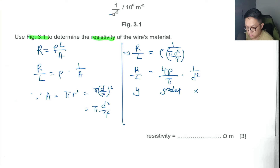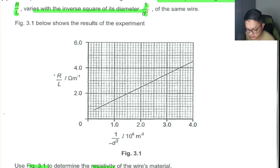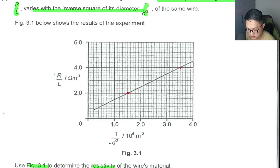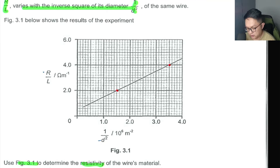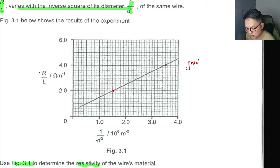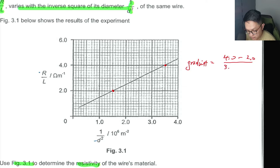Let's pick two nice points on the graph to find the gradient. Going back to the graph, let's use this point here and this one here. The gradient equals (4.0 − 2.0) / (3.5 − 1.5), remembering to multiply by 10⁶.